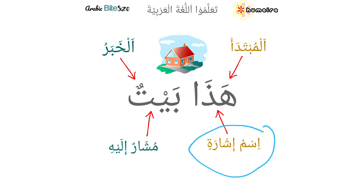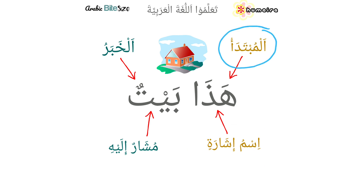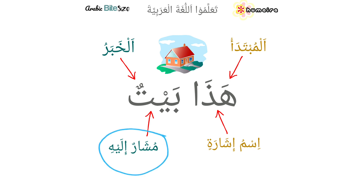So as for this word هذا, this is the subject. بيت — this is مشار إليه, it is the noun or the object we are pointing to, and that is the house.